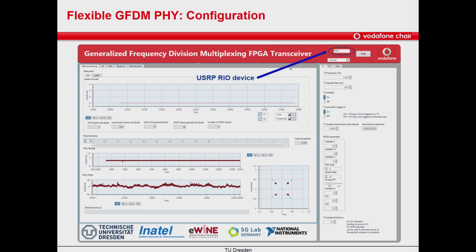The first parameter we have to configure is the USRP Rio device, and for this purpose we can use the National Instruments Measurement and Automation Explorer.